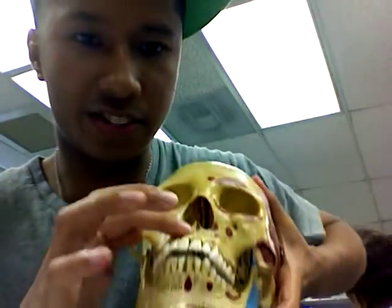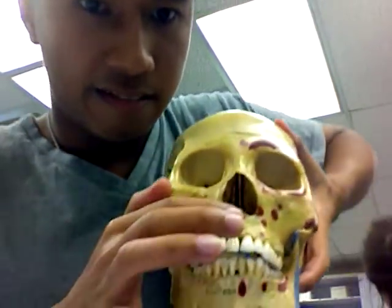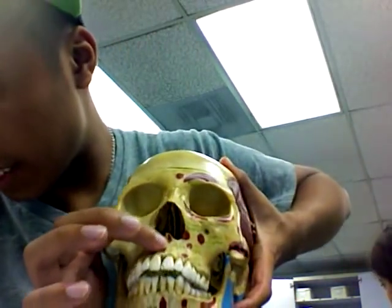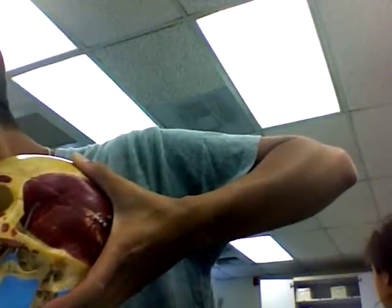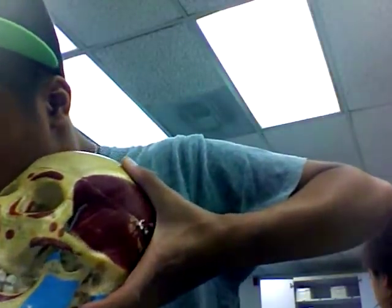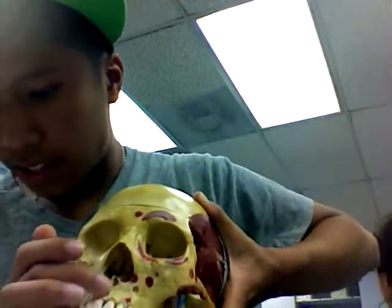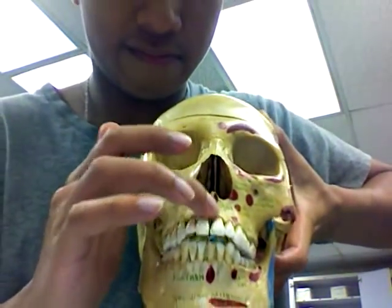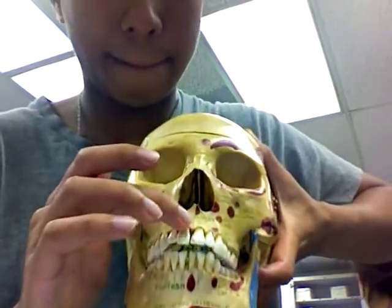The intermaxillary suture is right here — you can see the intermaxillary suture. In review again: intermaxillary suture is around here, sagittal suture.